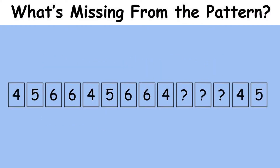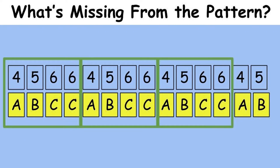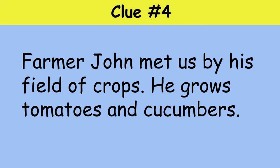Check out this last missing pattern question. It's very unique because this time, instead of pictures, we're using numbers. Can you figure out the missing pattern? If you can't figure out the missing pattern, change each number to a letter: each four is an A, each five is a B, each six is a C. So what are the numbers that belong where the question marks are in this repeated pattern? If you said the missing numbers were five, six, six, then you are correct. Since you answered our last pattern question correctly, you get our final clue — clue number four: Farmer John met us by his field of crops. He grows tomatoes and cucumbers.